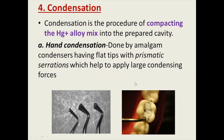The next very important step is condensation. Condensation is the procedure of compacting the mercury-alloy mix into the prepared cavity. The objectives are: it adapts the plastic amalgam mix to cavity walls and margins, increasing retention and minimizing micro leakage; it squeezes out unreacted mercury from the increments during building up; it reduces voids and keeps the matrix continuous; and it brings the strongest phases of amalgam close together, increasing the final strength of the restoration.